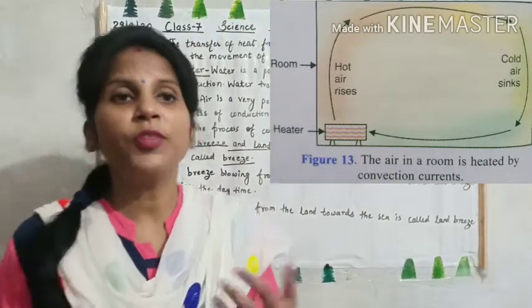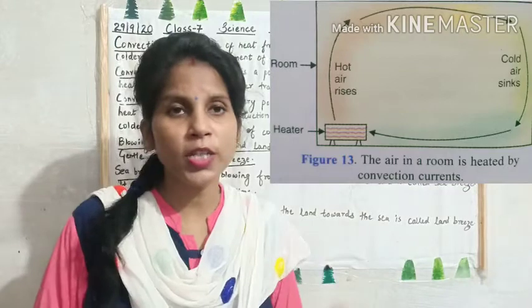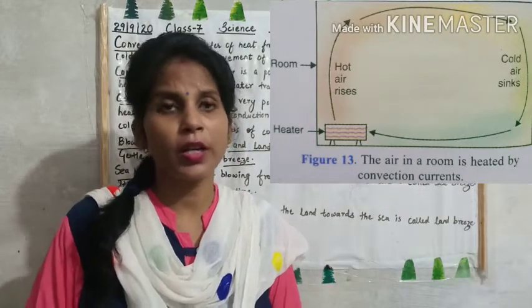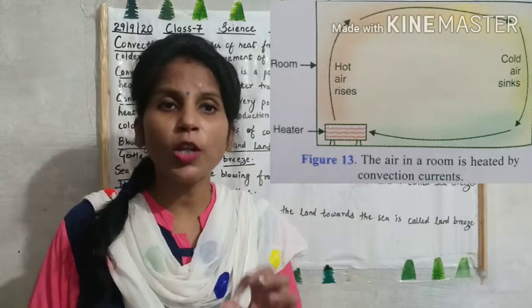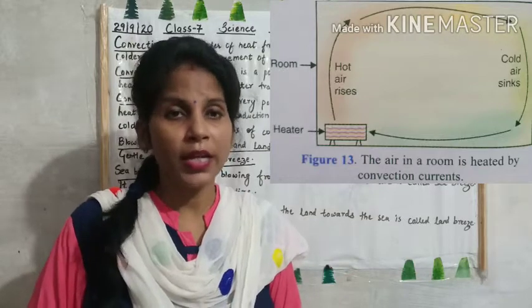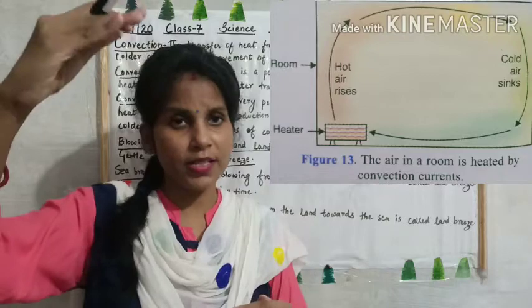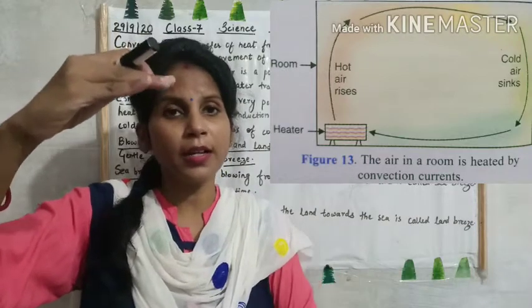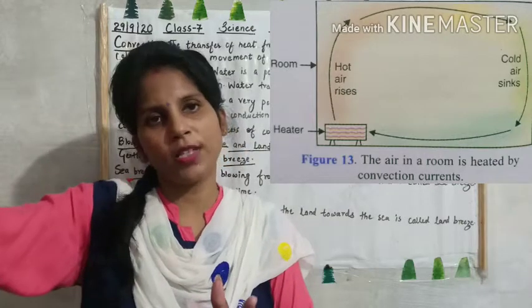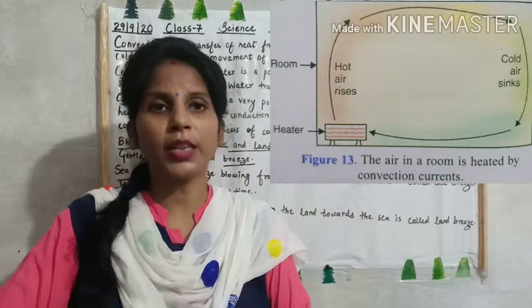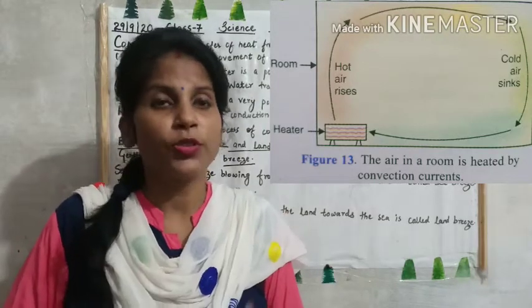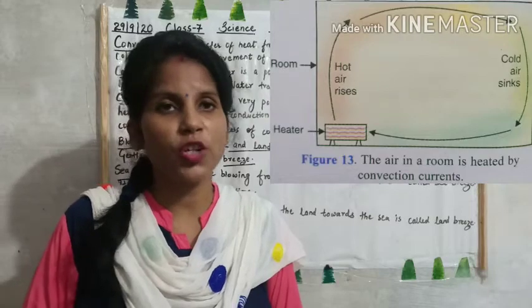For example, in winters we use a room heater. A room heater is a very good example of a convector. When we switch on the room heater, the air near the room heater gets heated up. This hot air rises up and the cold air comes back down. When that cold air gets heated, it again goes up. This is how convection of air works.